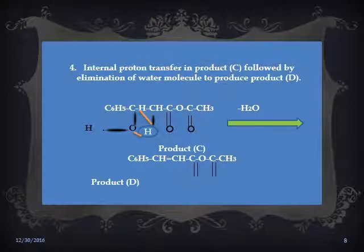This is the fourth step of Perkin reaction. In this step, internal proton transfer in product C followed by elimination of a water molecule produces product D. In this step, product C releases one molecule of water and we get product D: C₆H₅CH=CHCOOCOCH₃.